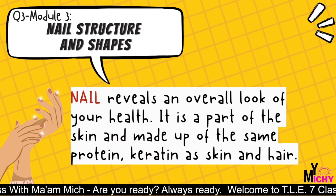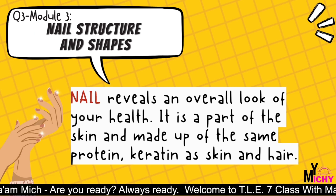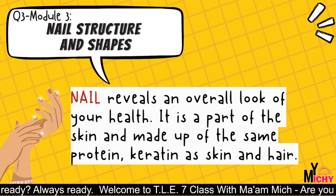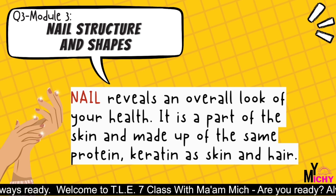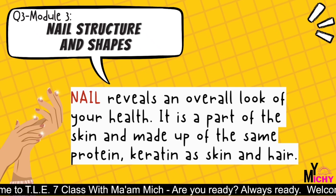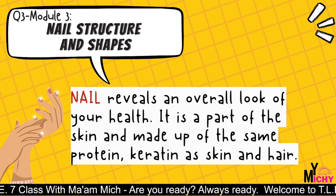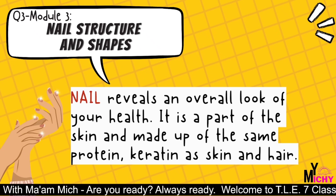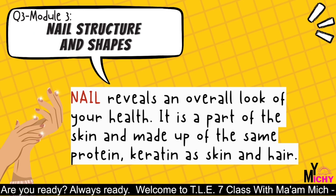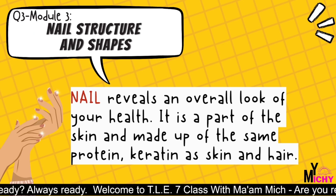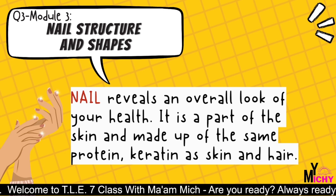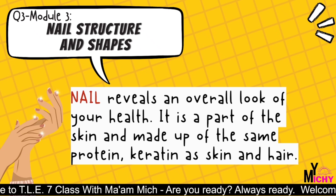Let's proceed with nail structure and shapes. The nail reveals an overall look of your health. It is a part of the skin and made up of the same protein — keratin — as skin and hair. Keratin is a type of protein that forms the cells that make up the tissue in nails and other parts of your body. Keratin plays an important role in nail health, protecting nails from damage by making them strong and resilient.